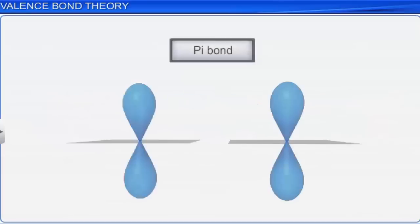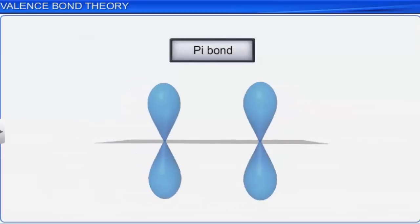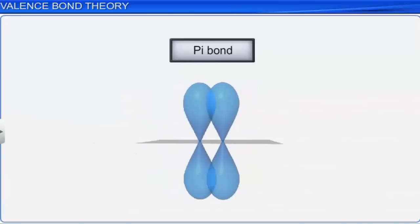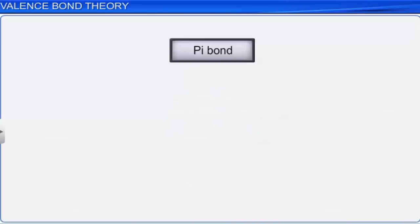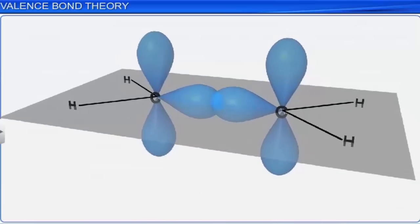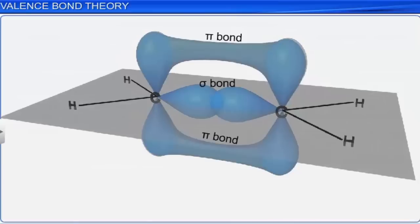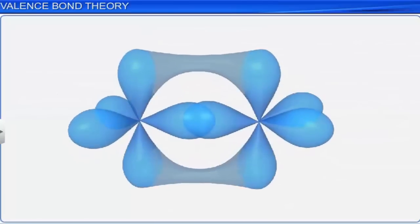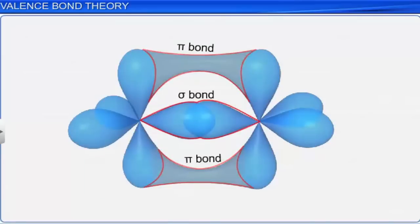A pi bond is formed when atomic orbitals overlap in such a way that their axes remain parallel to each other and perpendicular to the internuclear axis. The pi orbitals formed due to sidewise overlap consist of two saucer-type charged clouds above and below the plane of the participating atoms. Pi bonds can be formed in addition to a sigma bond between two atoms and are always present in molecules with multiple bonds. The overlapping area is larger in sigma bonds than pi bonds; therefore, sigma bonds are stronger than pi bonds.